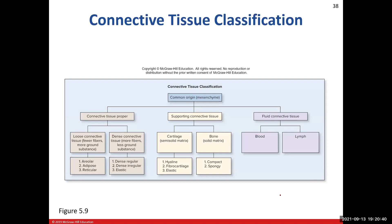Figure 5-9 shows the connective tissue classification — this is important. If you're feeling overwhelmed with connective tissue, start with this figure. There are three types: connective tissue proper, supporting connective tissue, and fluid connective tissue. Connective tissue proper has two subtypes — loose and dense — and each of those has three specific types. We'll go through all of those now.